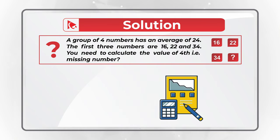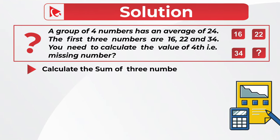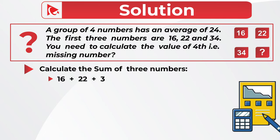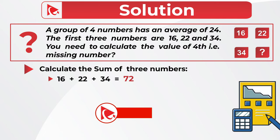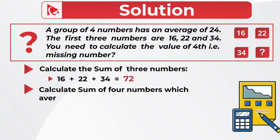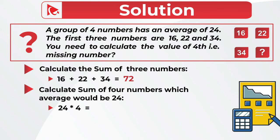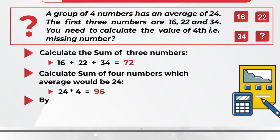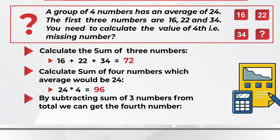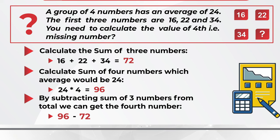In the first step we're going to calculate the sum of three existing numbers: 16 plus 22 plus 34 equals 72. In the next step we need to determine what would be the sum of four numbers for which the average would be 24. To do this we need to multiply 24 by 4, and the end result would be 96. In the last step we subtract the sum of three numbers from 96 to calculate the fourth number: 96 minus 72 equals 24.